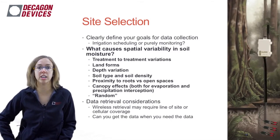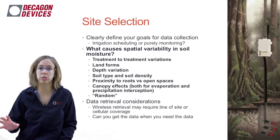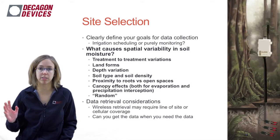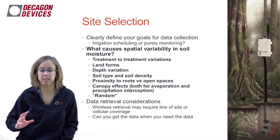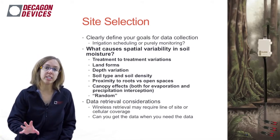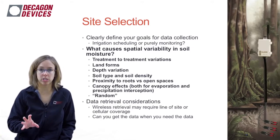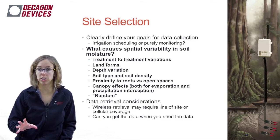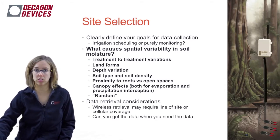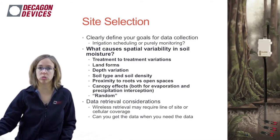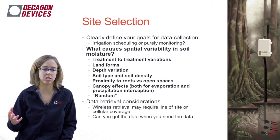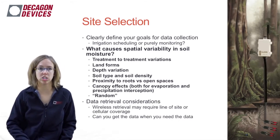We're going to talk a little bit about site selection. The goal is just to get you started on picking the right site. When you're getting started, clearly define what your goals are for gathering soil moisture data. You need to know what you're going to do with the data so that the data can work for you and address your goals. The biggest issue with determining the right site is the spatial variability in soil moisture.